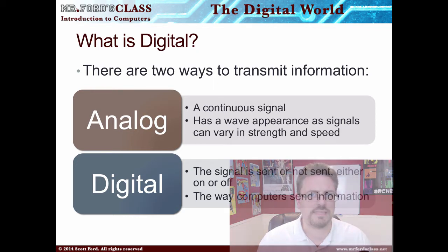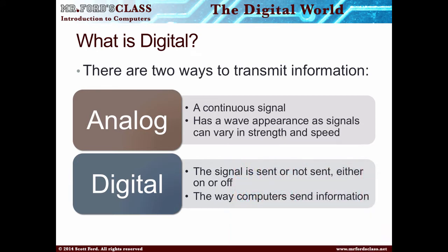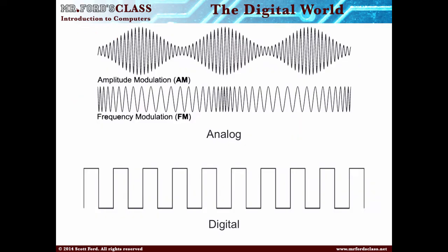Digital is an on-or-off kind of thing. It's the way computers and technologies think and work. We can see this in AM and FM — amplitude modulation as well as frequency modulation. In amplitude modulation we're playing with the strength of the signal. In frequency modulation we're playing with how fast the signal is — how many signals come by in a specific amount of time. And you can see it's a wave format regardless of whether it's AM or FM.